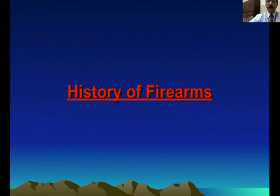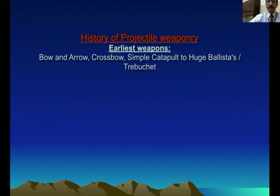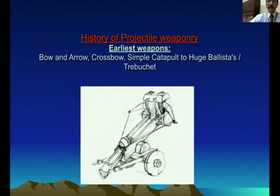A little bit about the history of firearms: initially there were bows and arrows, crossbows, simple catapults, and huge ballistas — that is the manjaniq — which was used for throwing big stones, as used by Mohammed bin Qasim.